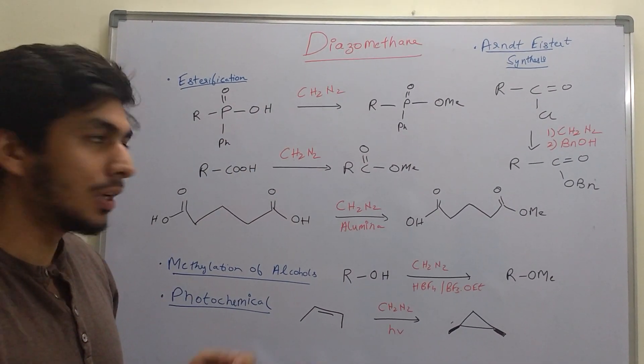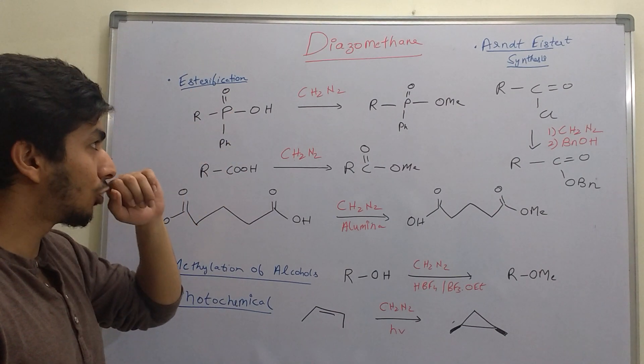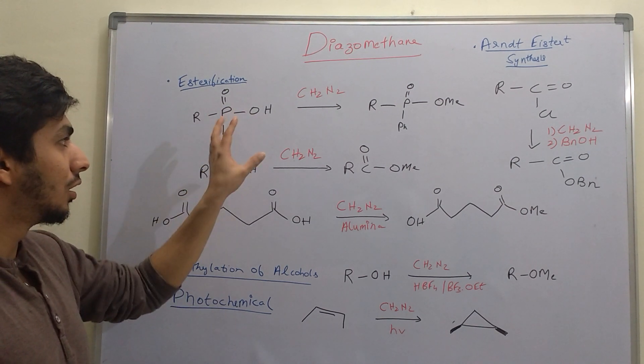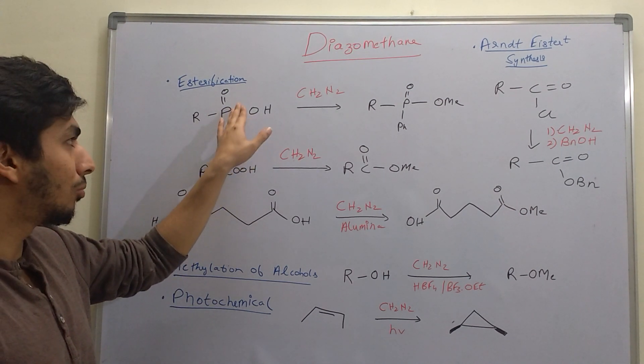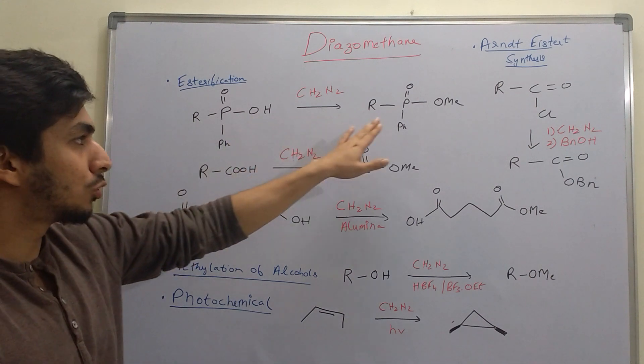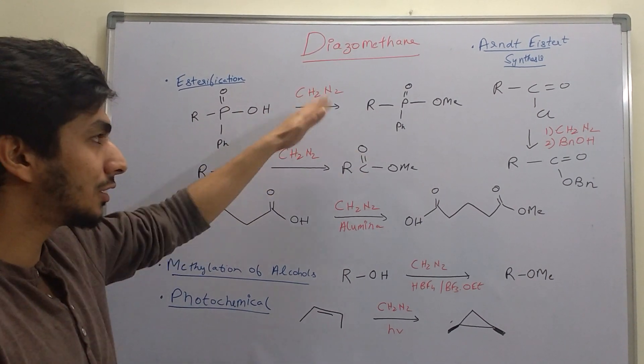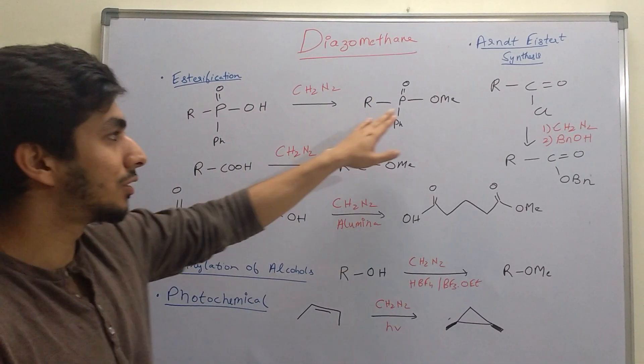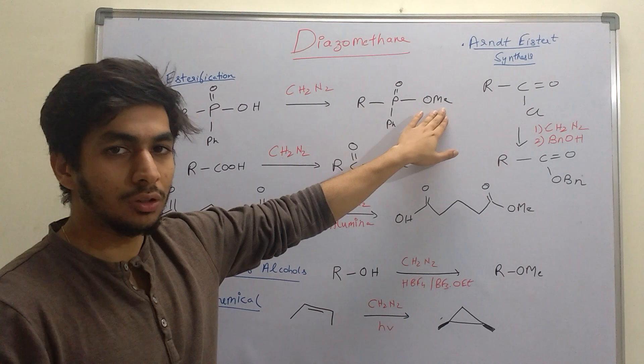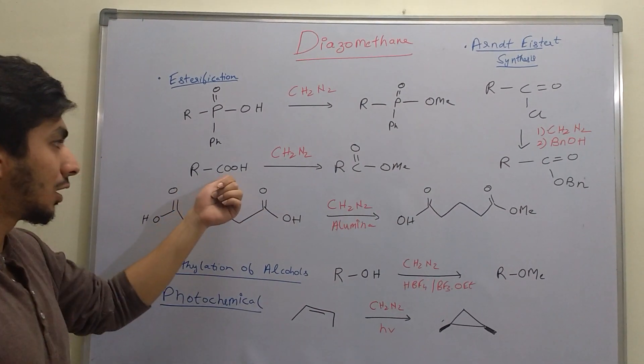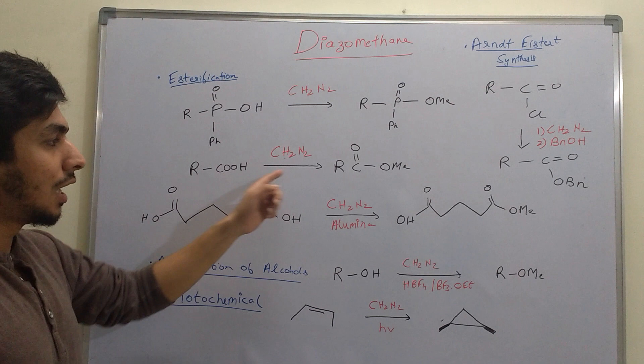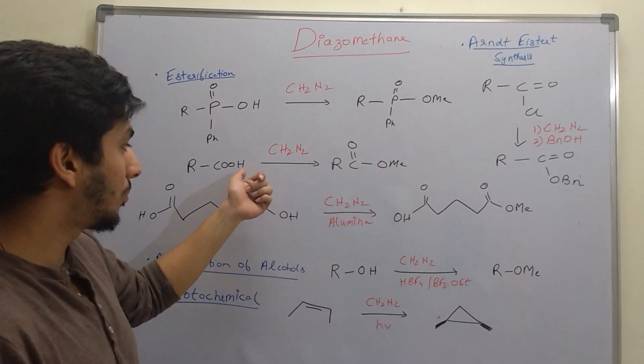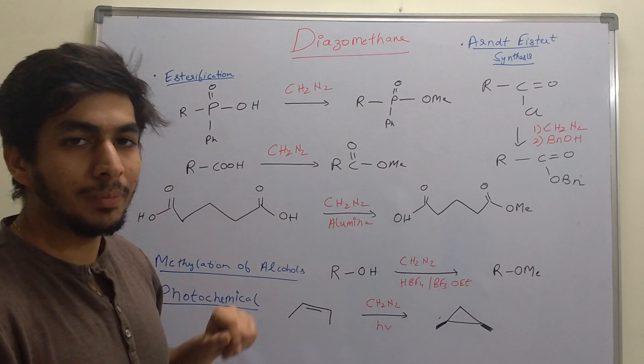Diazomethane, CH2N2, is a good methylating agent. The first reaction is esterification. Whenever you have a very acidic proton, for example in this acetic group R-OH, it simply leads to addition of methyl. Since it's a methylating agent, we get OME. The acidic proton H is removed and instead we get a methyl group. Similarly, with carboxylic acid, we have acidic OH leading to esterification and we get an ester. The proton is replaced by the methyl group.